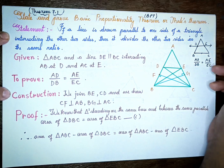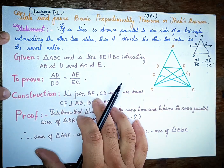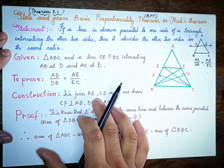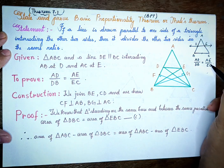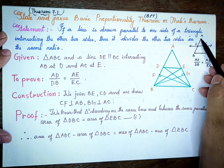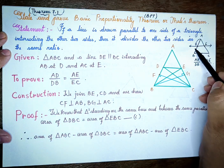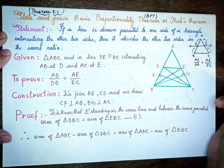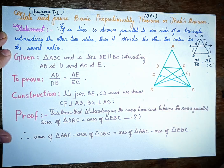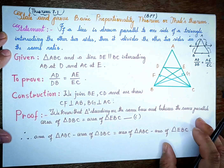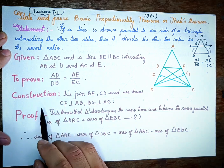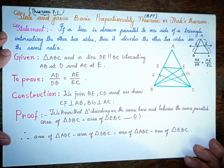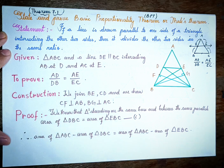Points D and E are on the triangle. To prove: AD divided by DB equals AE divided by EC — that is, the two sides are in the same ratio. Now, what do we need to do with the constructions?